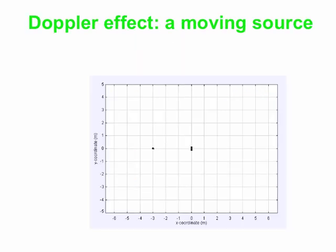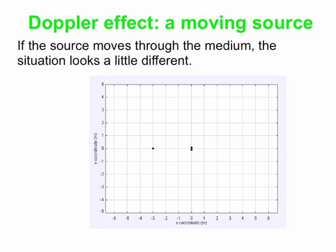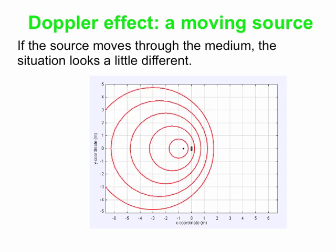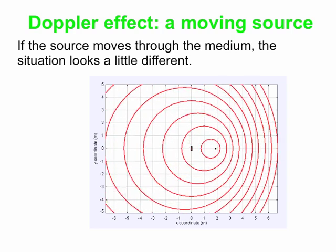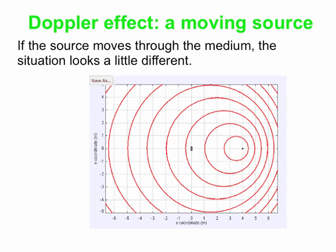Now let's talk about what happens when the source moves. The situation looks different — we can see a difference in the pattern. When the source doesn't move, all those circular wave fronts have the same center. When the source moves, those wave fronts have different centers because they were emitted at different times, and during each interval the source moved to a different spot. You get an asymmetric pattern — waves pile up in front and are spread further apart behind the source.